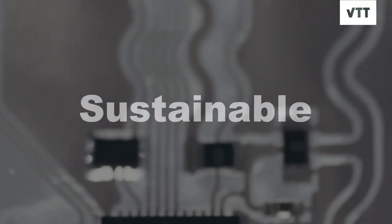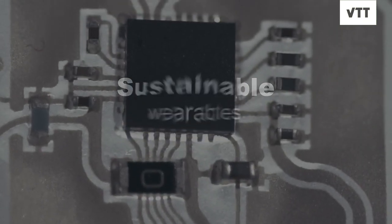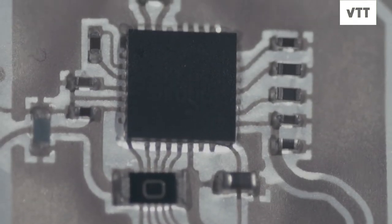As the use of wearable electronics increases, the amount of unrecyclable electronic waste accumulates. Electronic components are mainly from metals and semiconductors and ceramics, for example. And then some part of that are recyclable.